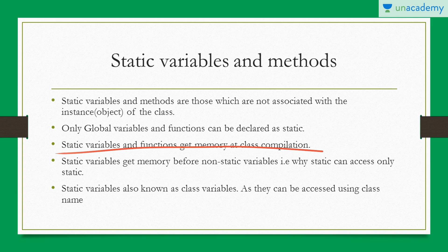Static variables and functions get memory at class compilation. It means that whenever a class is being compiled, all the static variables and functions get memory at that point of time. That is why we do not require an object to invoke them — we can directly invoke them or use the class name. We can also use an object to invoke them, but it is not recommended; we should use the class name instead.